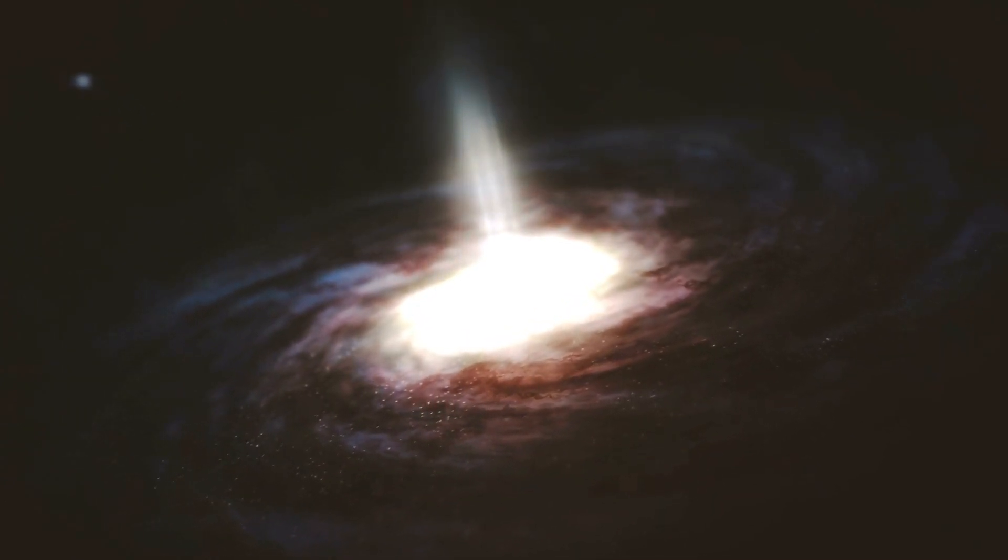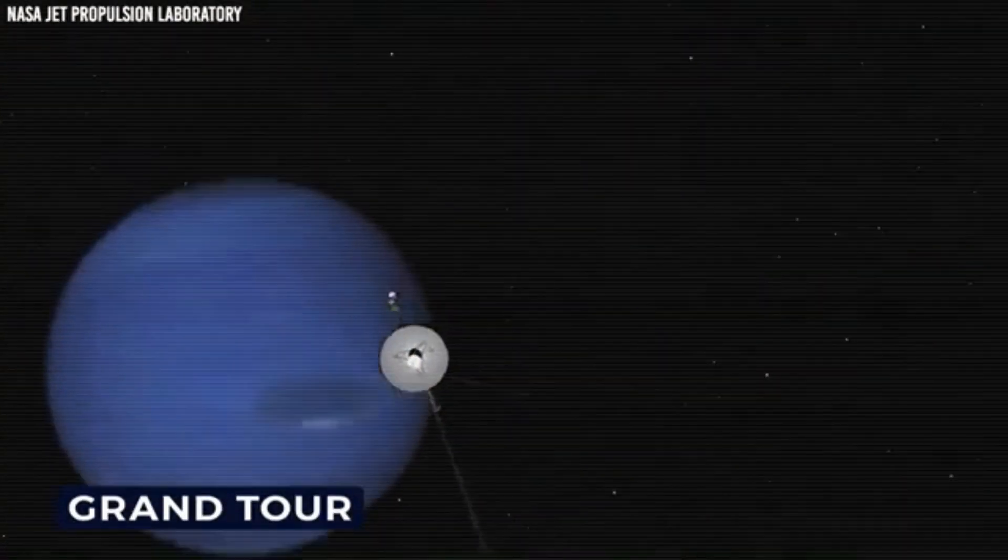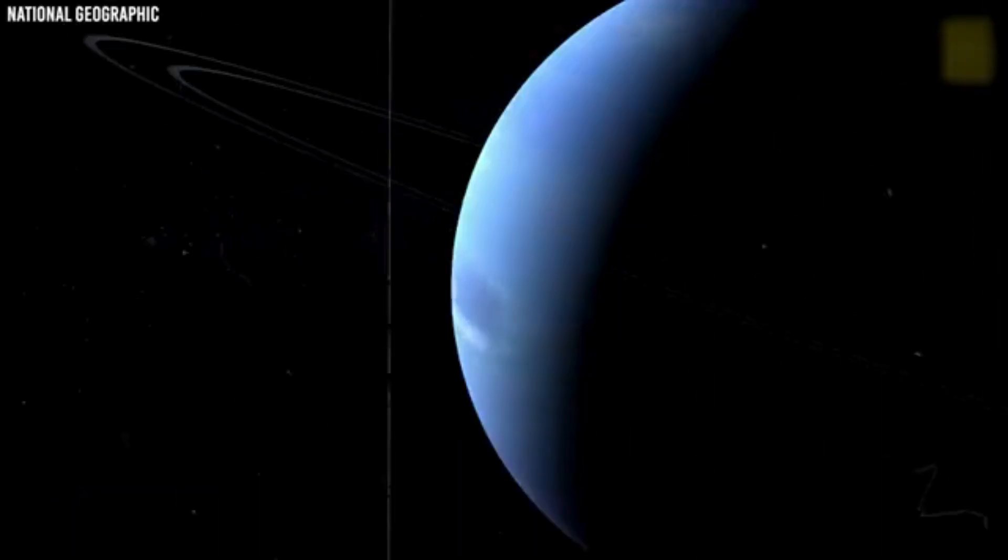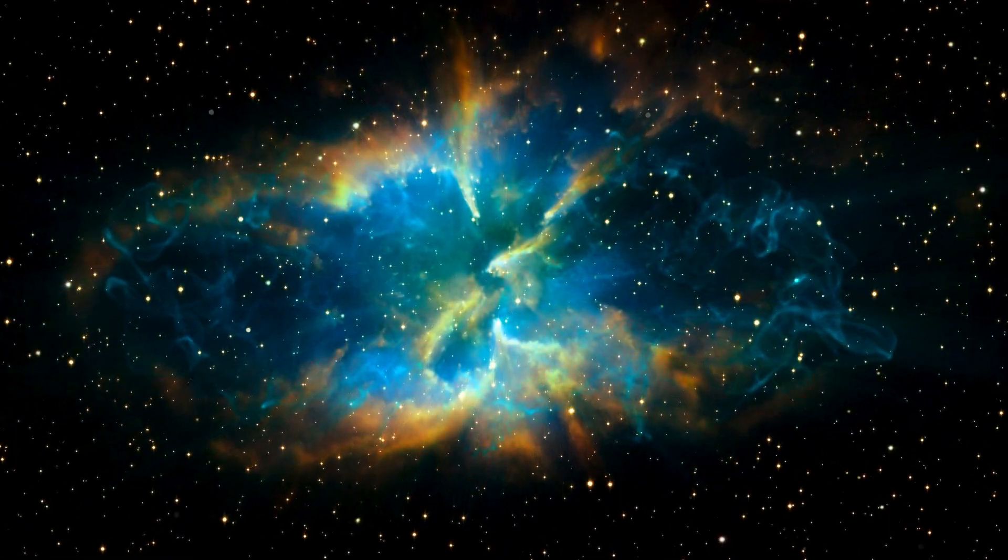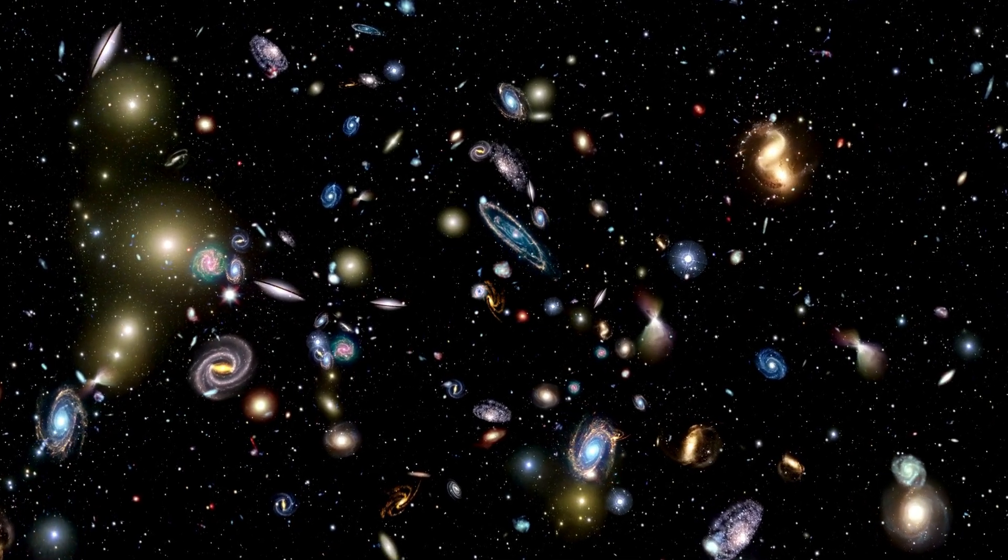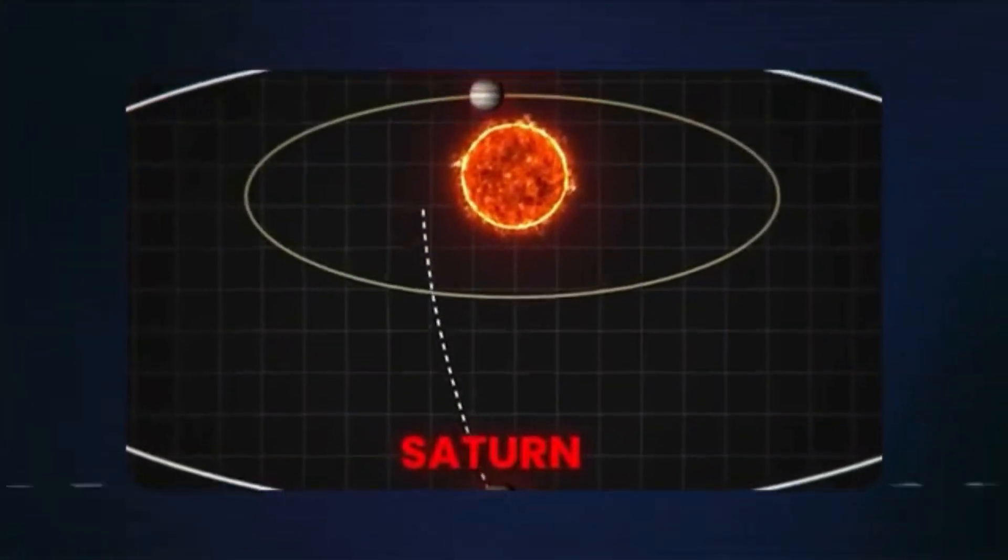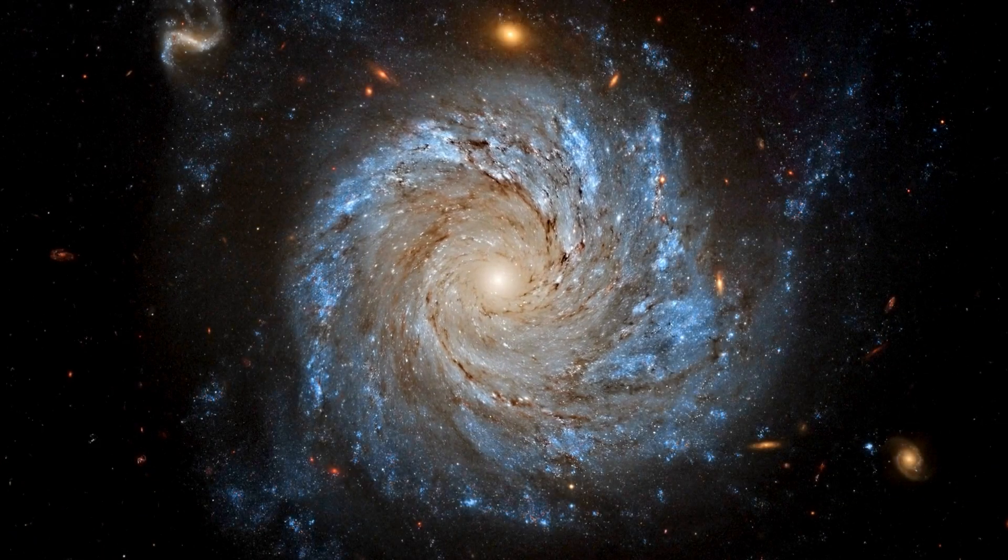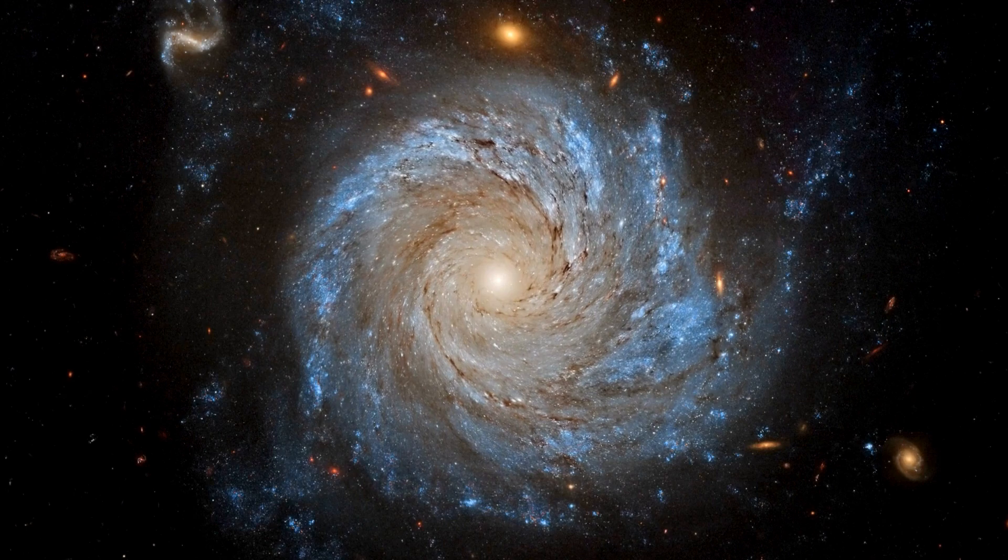Voyager 2 took a different path, allowing it to continue on to Uranus and Neptune. Its observations of Saturn's moon Mimas, nicknamed the Death Star Moon due to its giant crater, and the planet's complex ring system kept scientists busy for years.